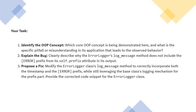Your task is to identify three points: first, identify the OOPs concept — which OOPs concept is getting implemented and demonstrated here, and what misunderstanding the application has developed. Second, explain the bug — where the problem is lying. You have to clearly describe that the error logger's log message method does not include the error prefix from self.prefix in its output. Third, propose a fix. This is how debugging works — you can be asked to identify the concept, identify the bug, or propose a fix.